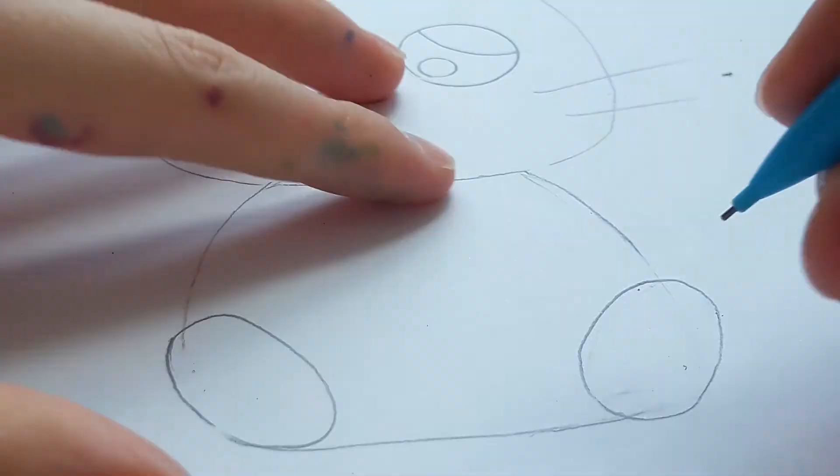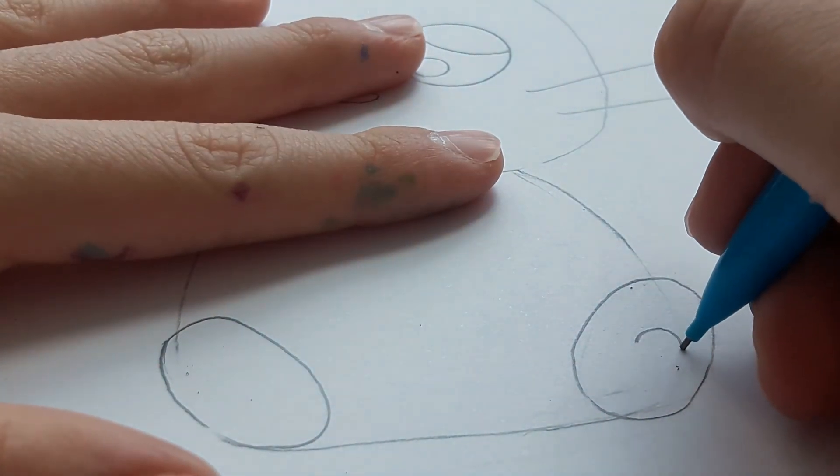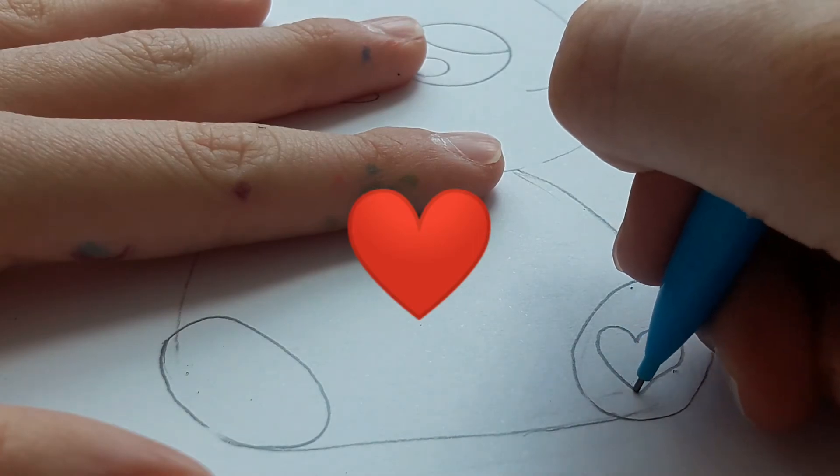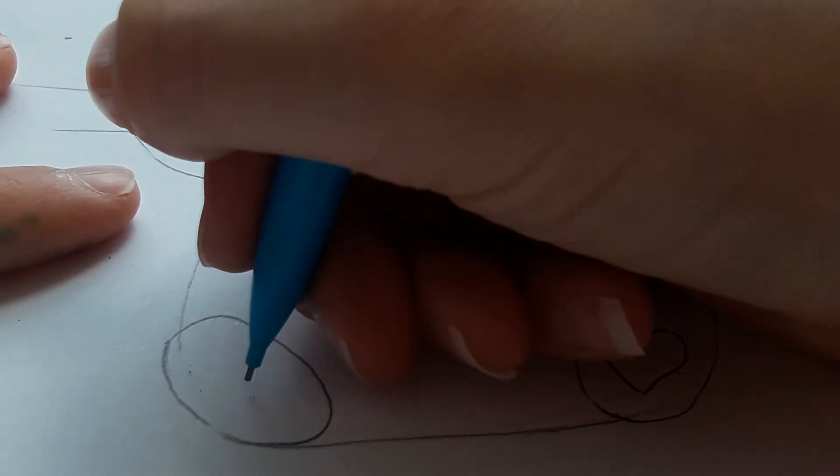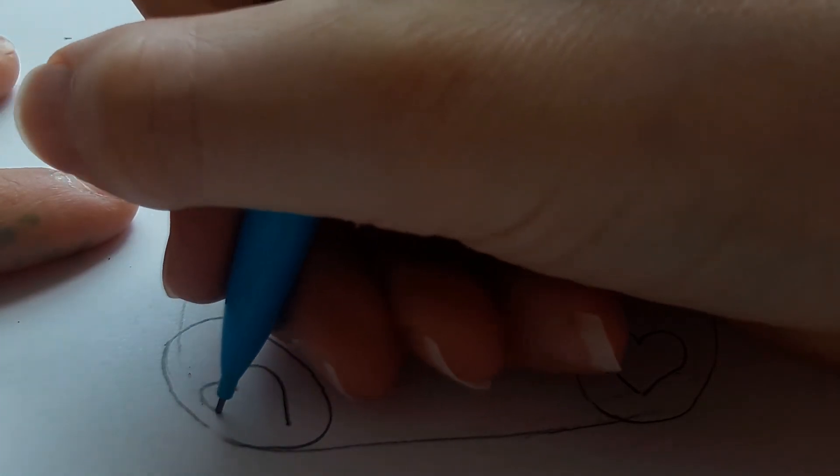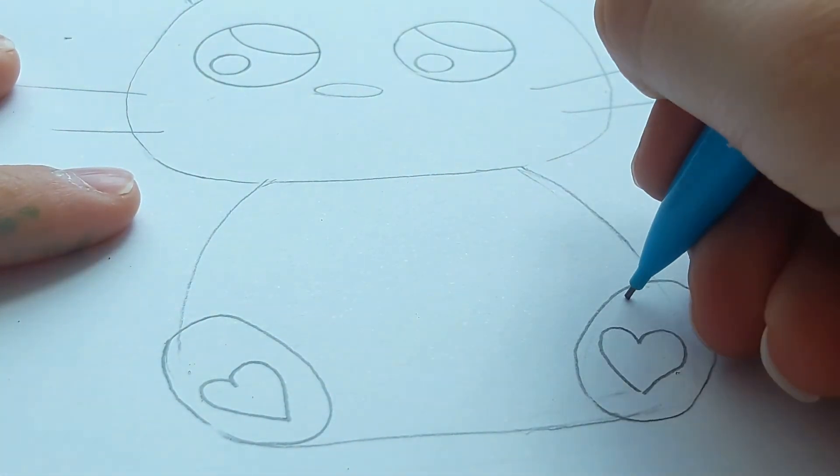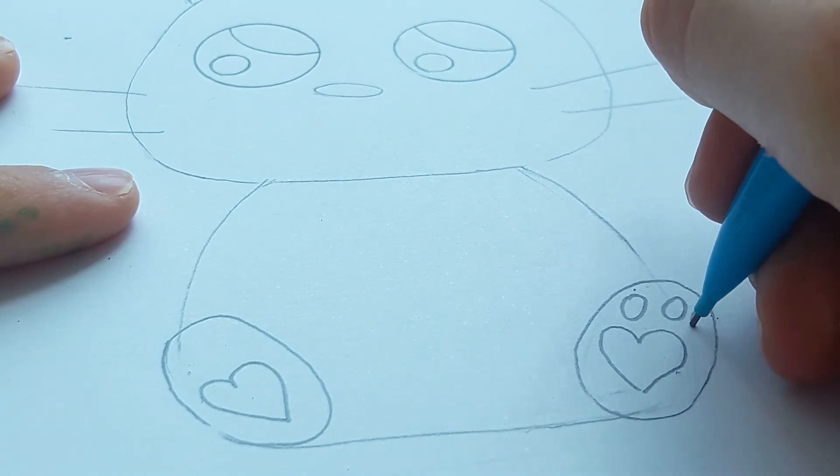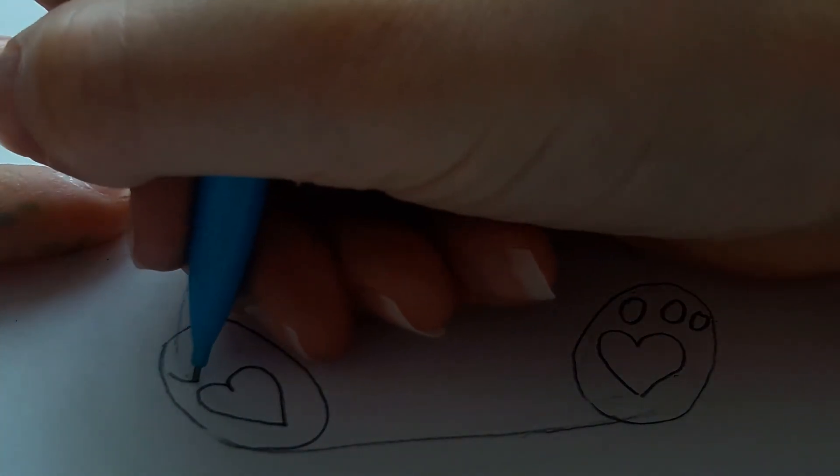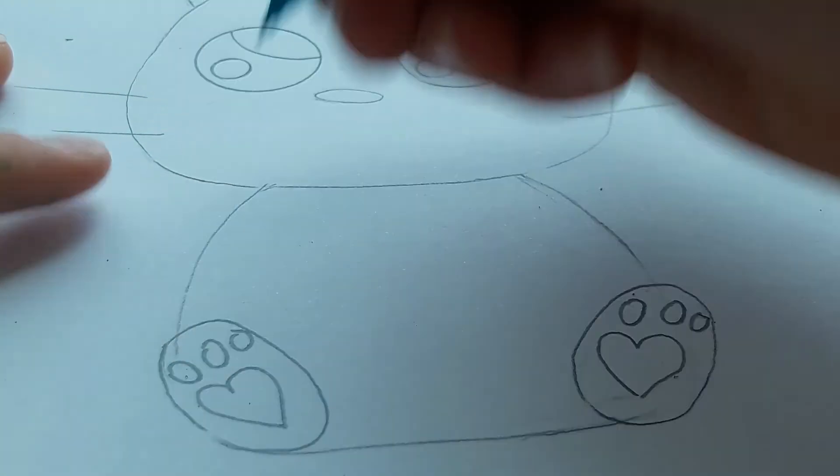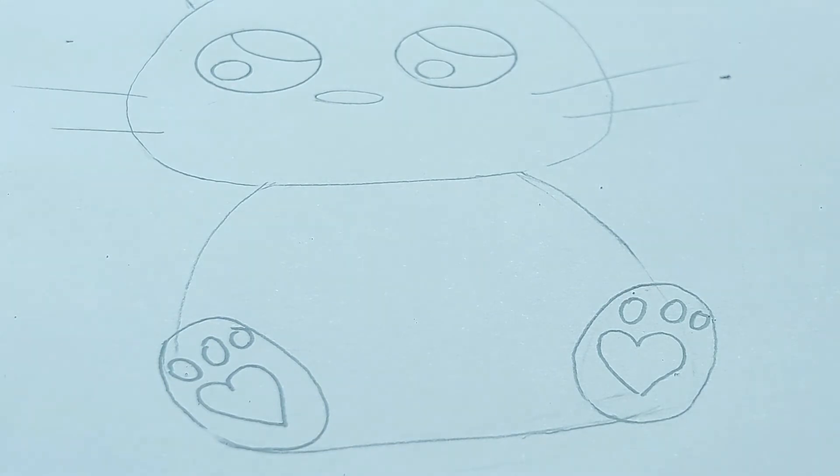Now to do the inside, we're just going to draw a foot on each leg. We're just going to do three little ovals for the foot.